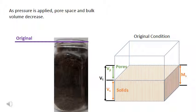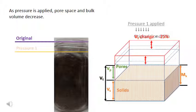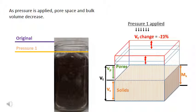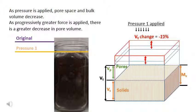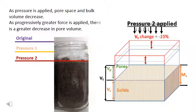In the previous slide, we saw that pore volume and total volume, also known as the bulk volume, decrease as pressure is applied. Observe the changes in the total volume in the diagram and in the soil in the jar. These jars are approximately 13 cm tall. As progressively greater force is applied, there is an even greater decrease in pore volume. Each pressure increment decreased the height of the soil in the jar by about 1.5 cm.